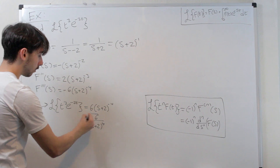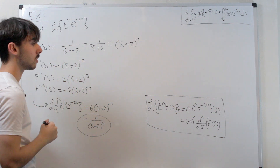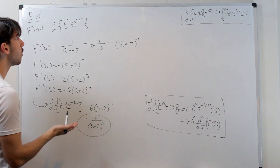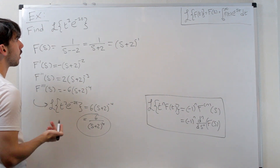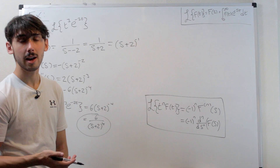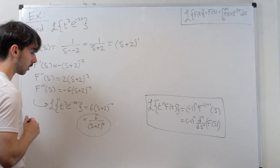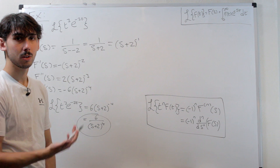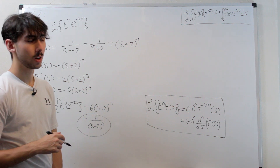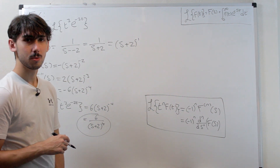So this is the Laplace transform of t cubed·e to the minus 2t — that's kind of how you use the formula. Note of course this will work for anything, so this could be t cubed times sine t or something like that. We can do questions like that in the future, but this is the basics of how you use this situation. Thank you guys so much for watching, I highly appreciate it as always, and I'll see you in the next video.